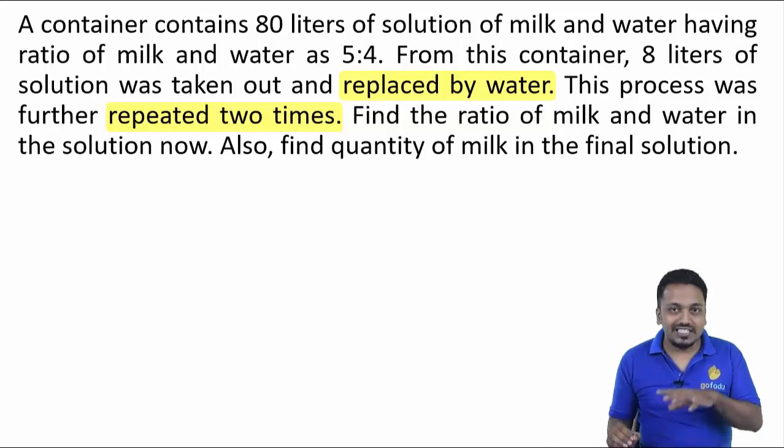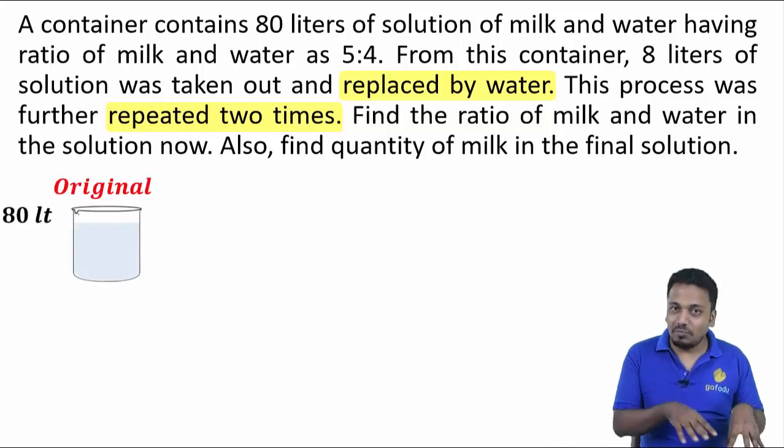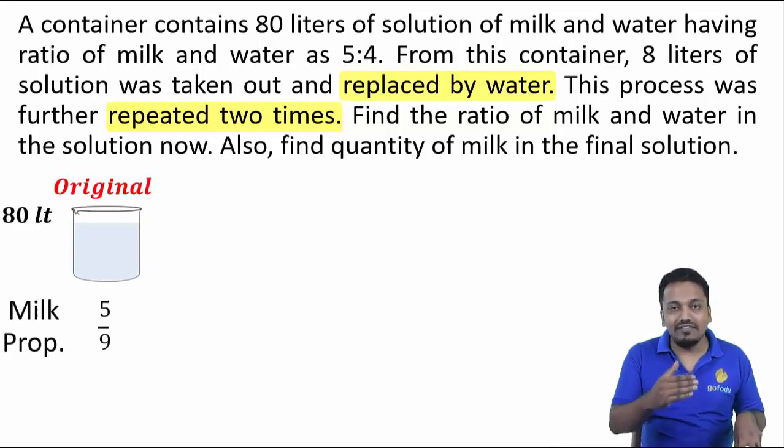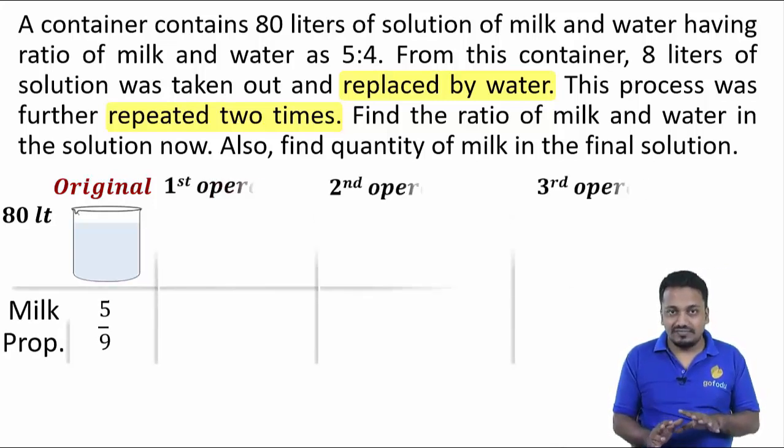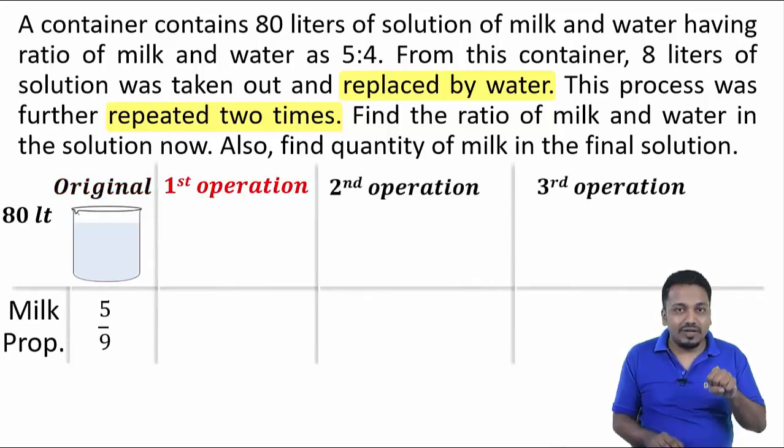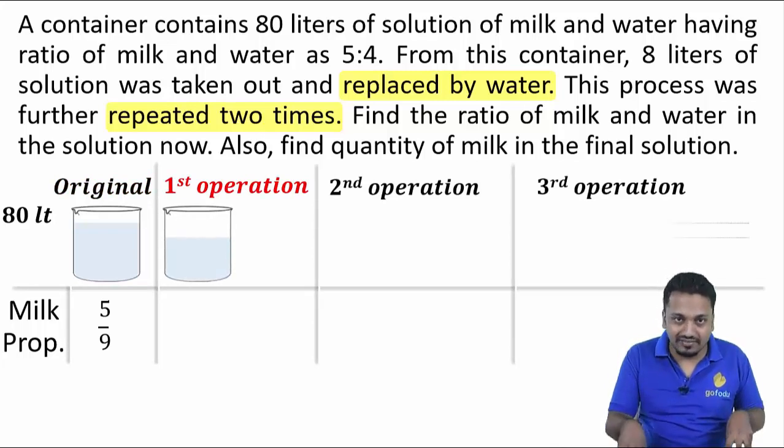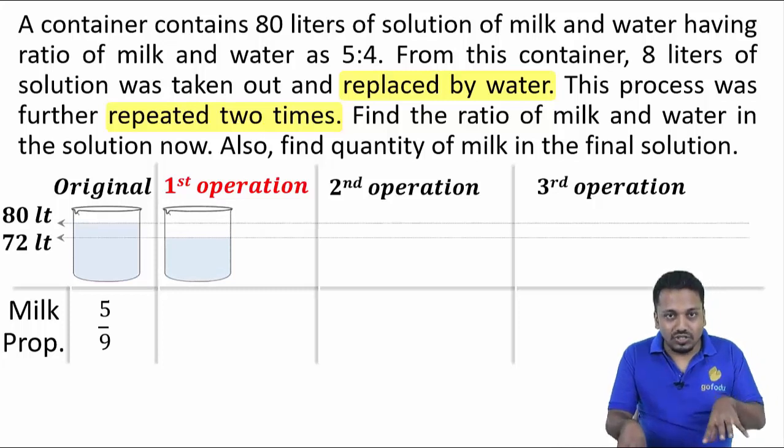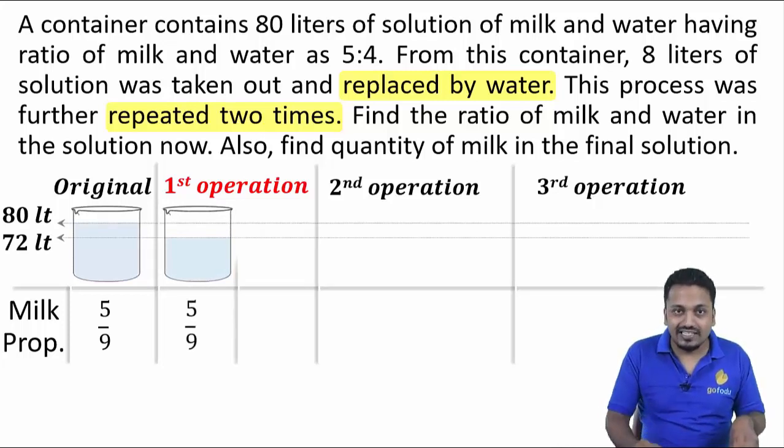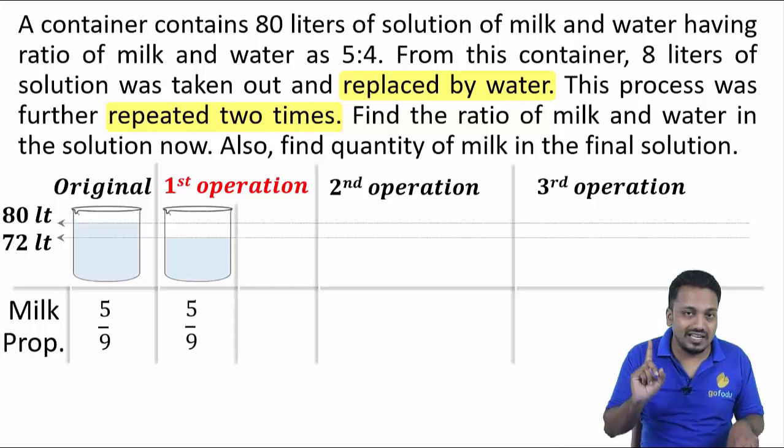Originally, the mixture is 80 liters and the proportion of milk is 5/9. Look at first operation. 8 liters of mixture is taken out, 72 liters remaining, and the proportion of milk is still 5/9 as removal won't change the ratio of constituents.